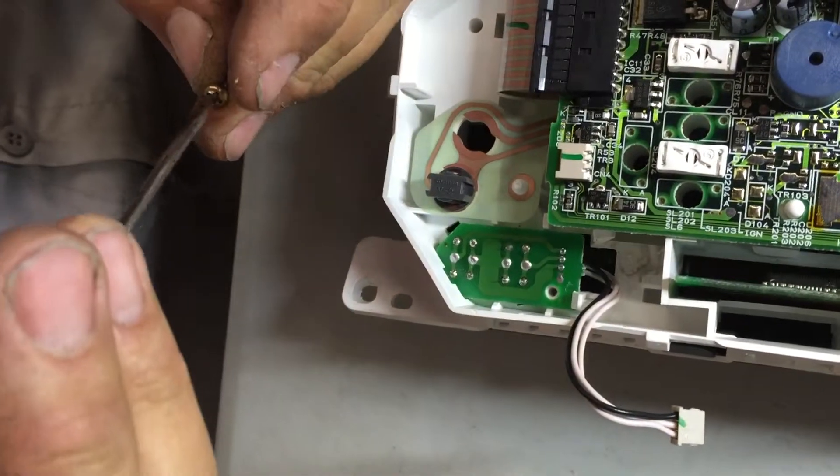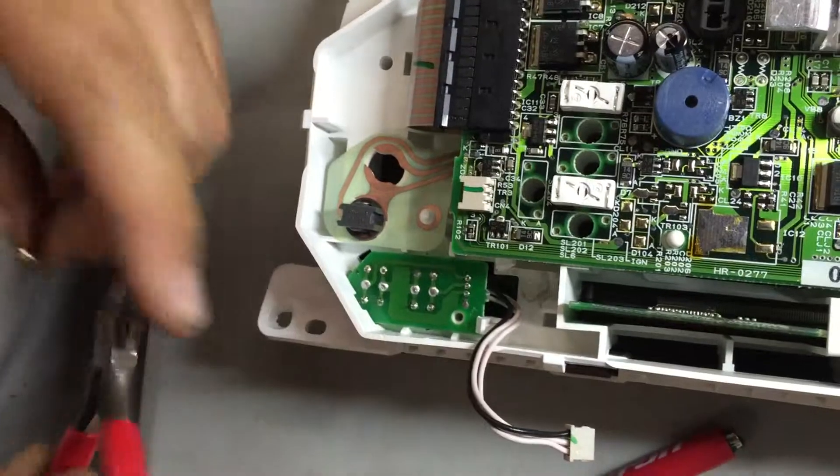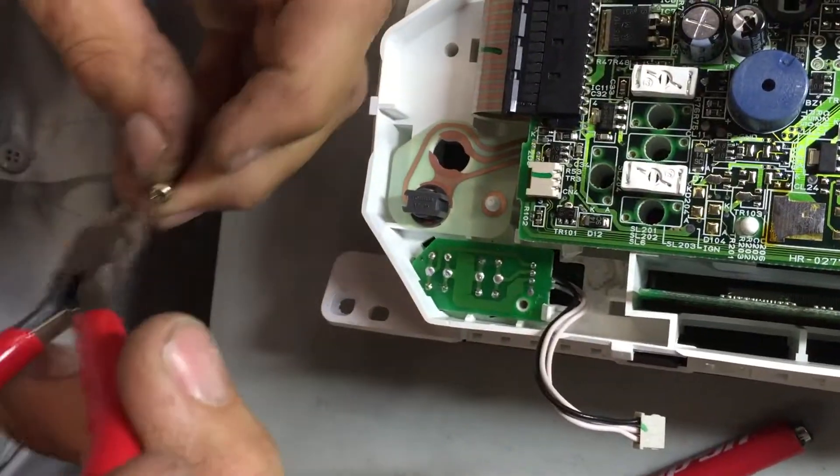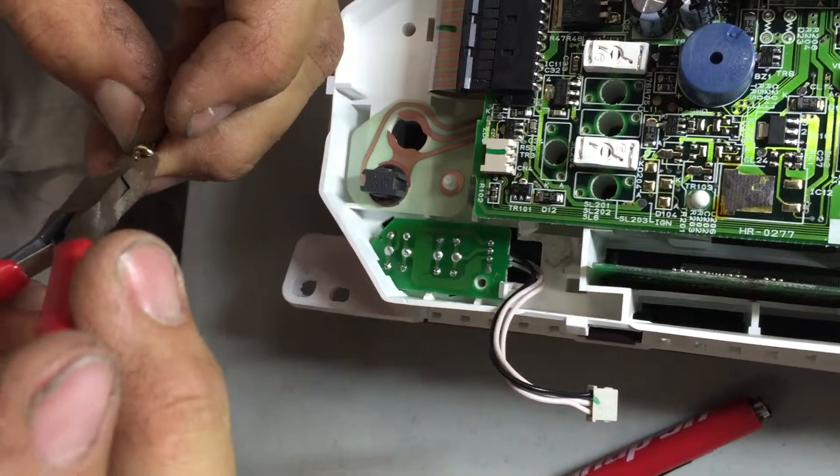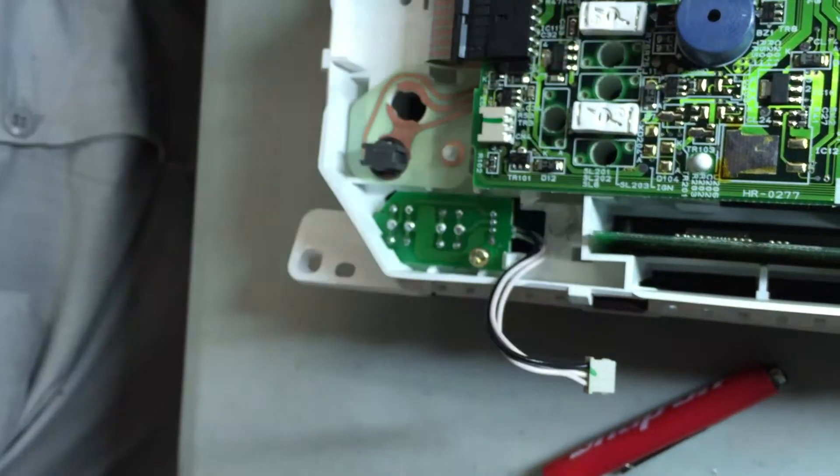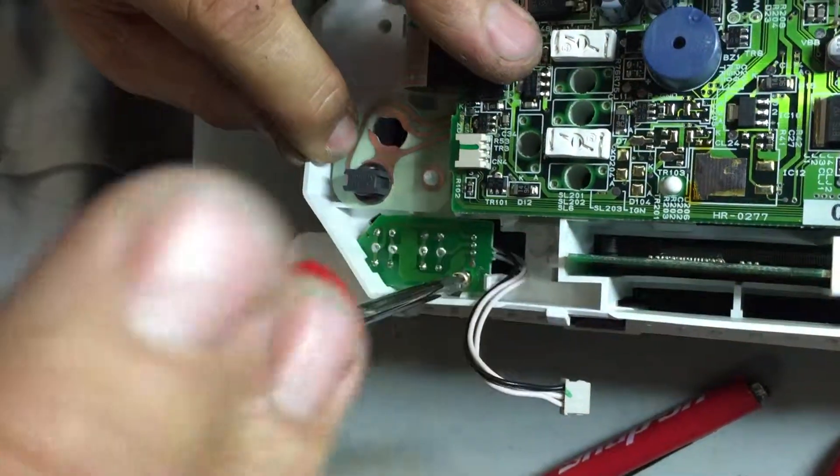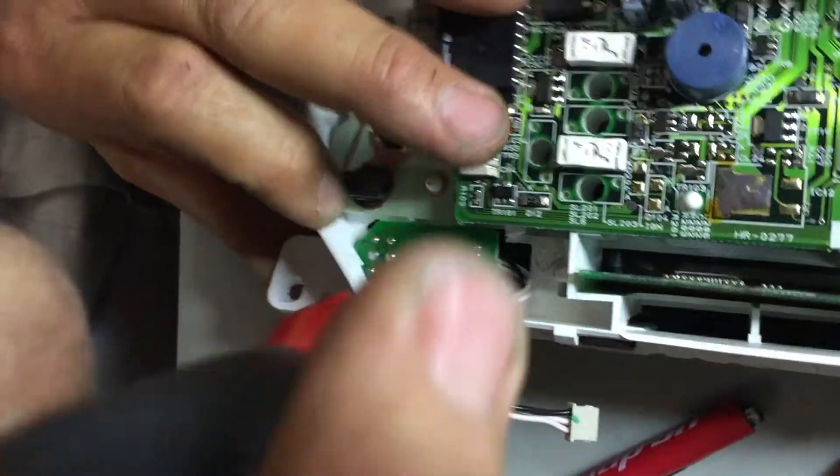I'm going to get the screw set down in there. I'm going to use my little wire cutters that are here like tweezers and get it set in the hole. Then I'm going to use the number one Phillips again and run that screw back down in.